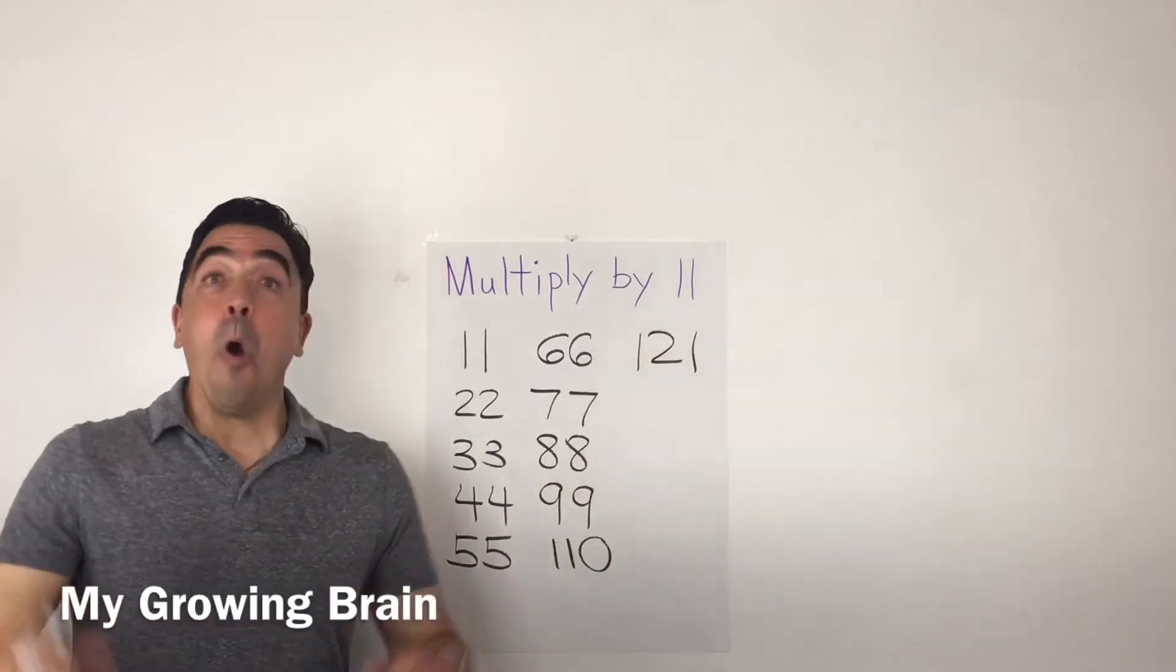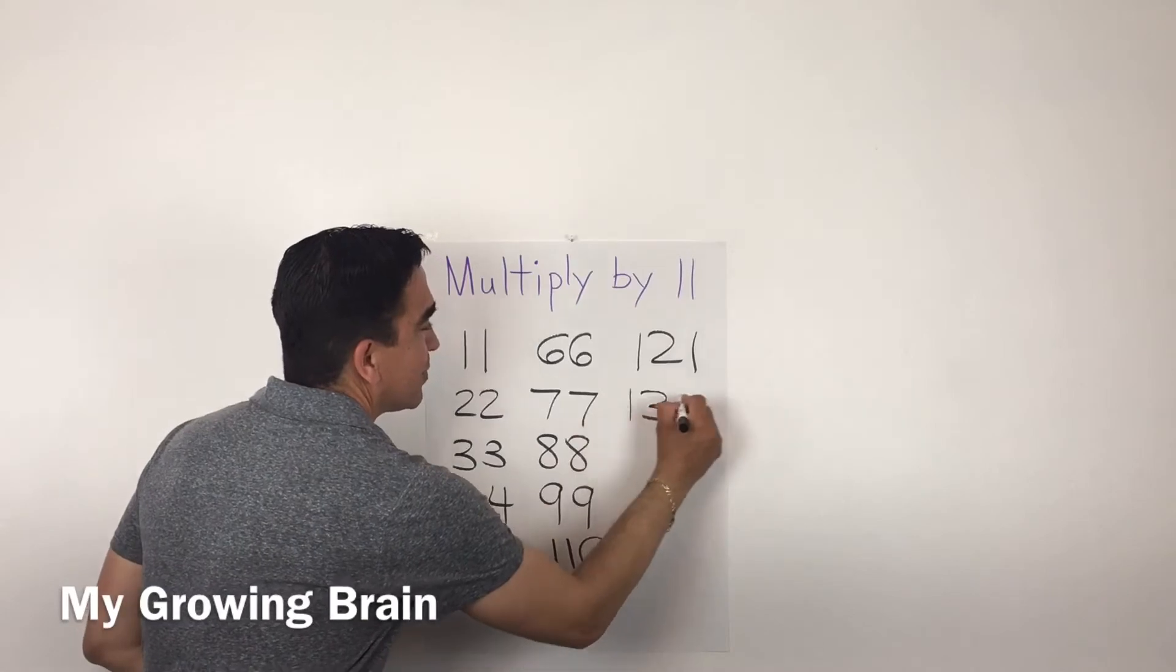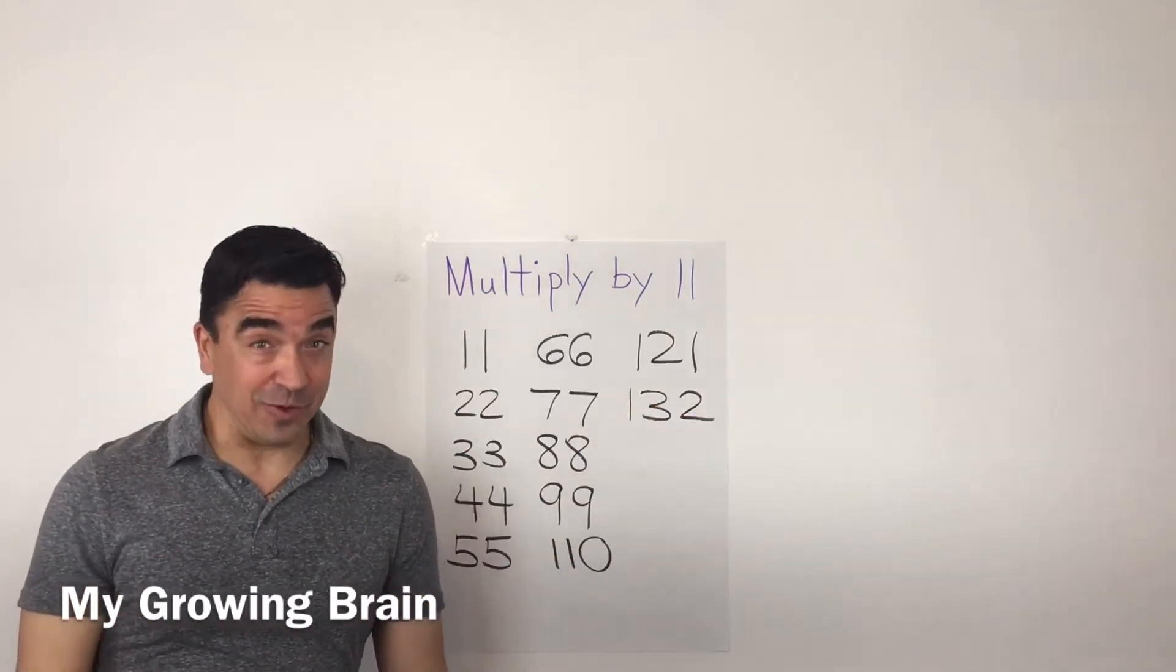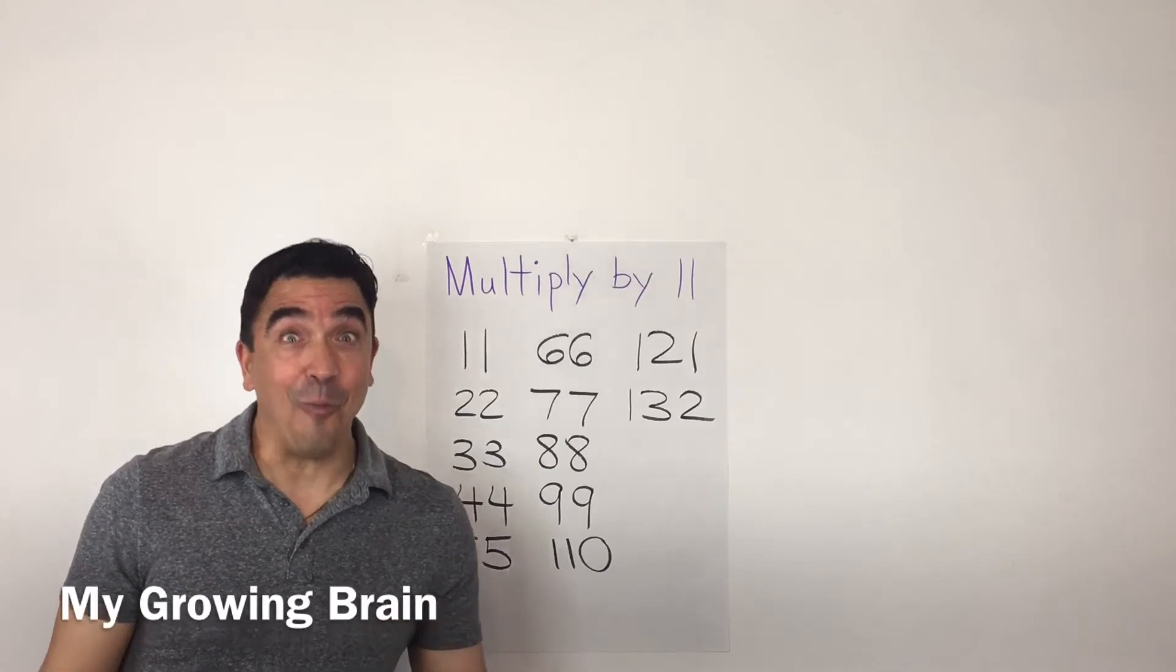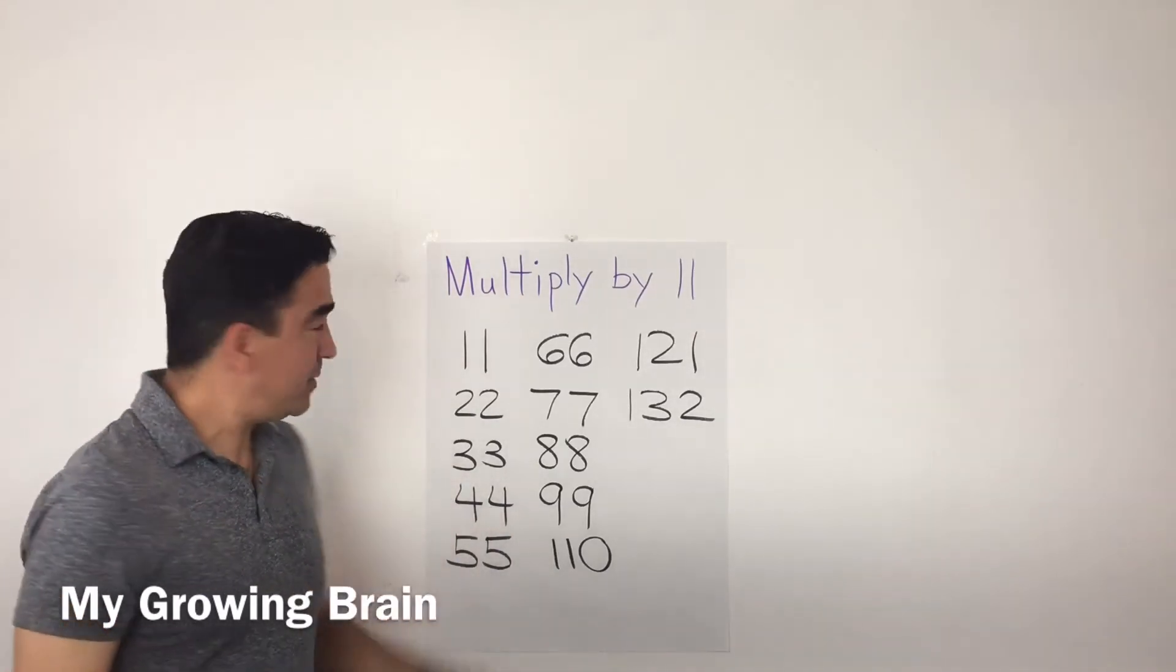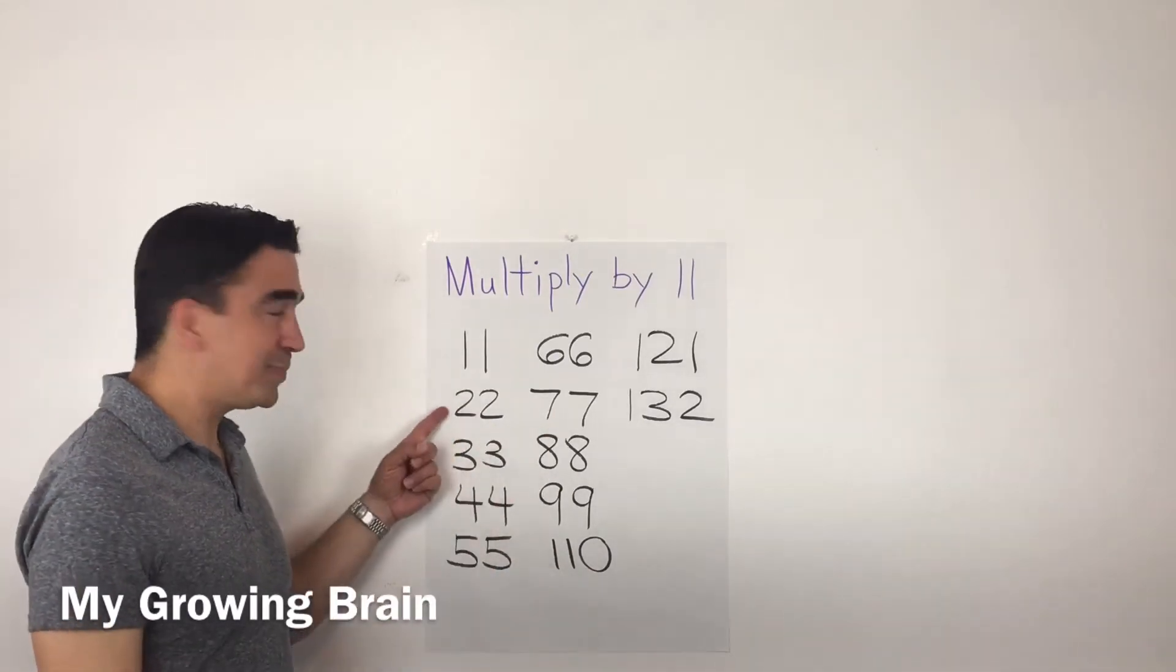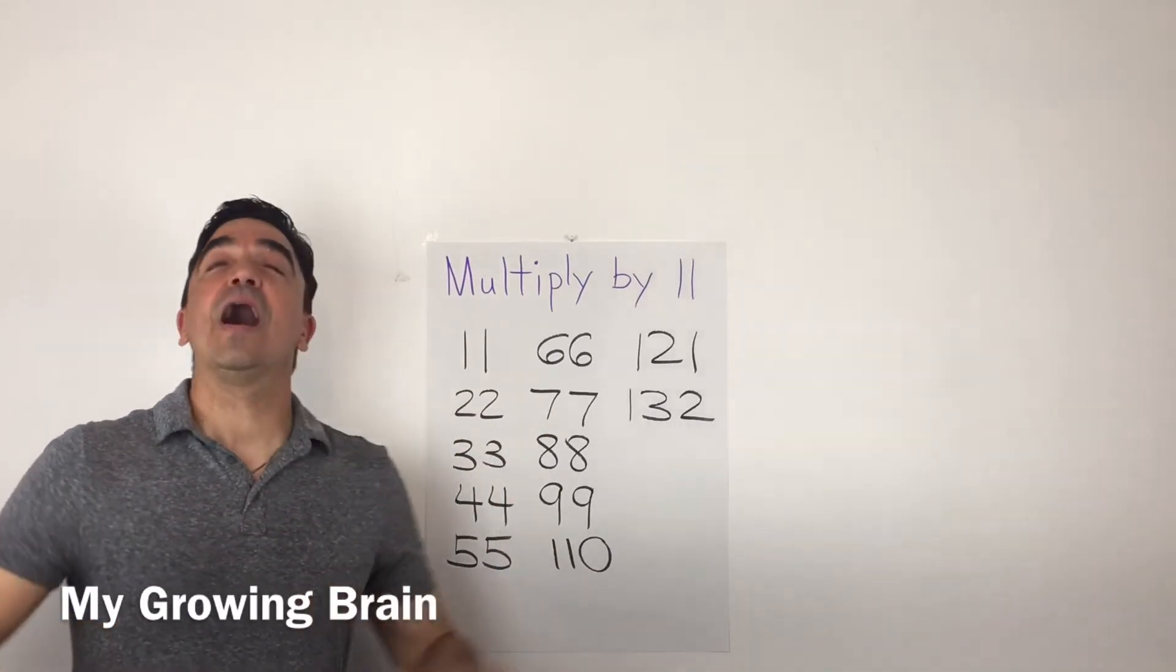All right, watch, here's the trick. 11 times 1 is 11, 11 times 2 is 22, 11 times 3 is 33, 11 times 4 is 44, 11 times 5 is 55, 11 times 6 is 66.